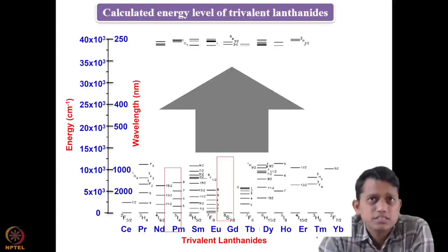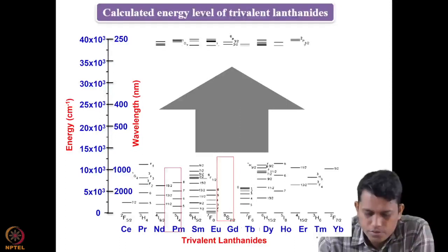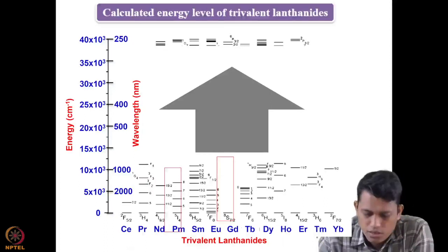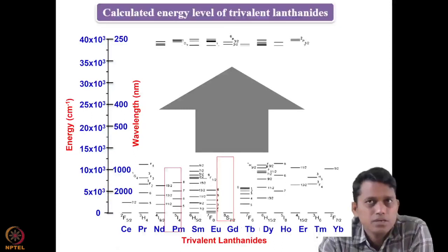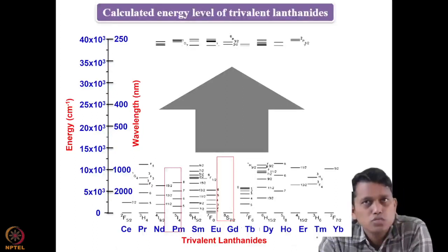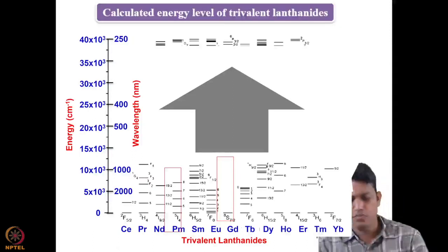Let us look at some spectra. The term symbol we calculated earlier was for Europium³⁺, which is an f⁶ system. We calculated that 7F is the term, and using LS coupling we get J values from 0 to 6. Using Hund's rule to get the ground state configuration, the ground state is 7F₀ because it is less than half-filled.